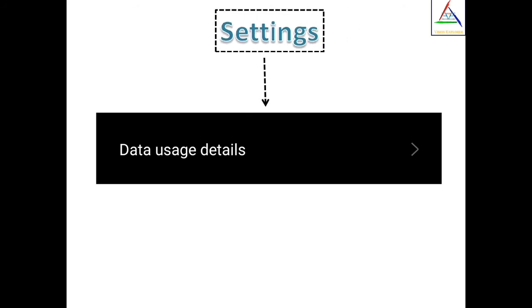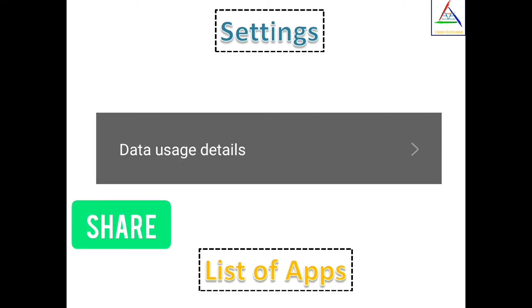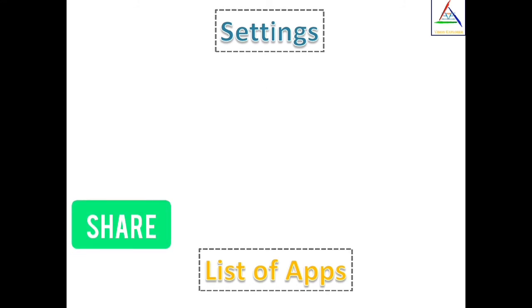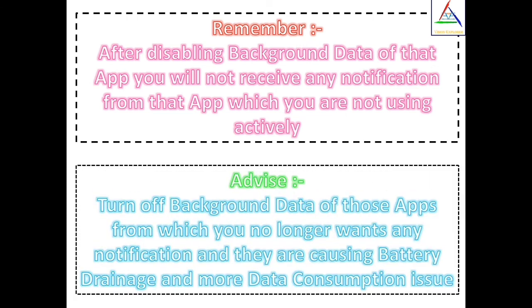To solve more data consumption issues, go to data usage in settings. If you find any app which is not useful but still running in the background and consuming your data, you can turn off its background data in app info. Again, after closing background data, you will no longer receive notifications from that app, so turn off background data only for apps from which you no longer want notifications and that are causing excess data consumption and battery drainage.